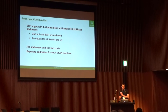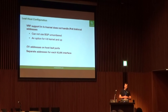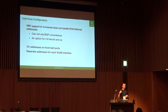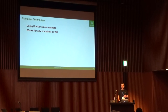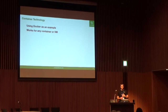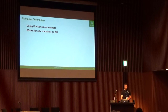Leaf-host config: VRF support in the 4.4 kernel does not have IPv6 link-local, so for this demo I had to use slash 31 addresses on each one of the interfaces between the host and the leaf. Each VLAN subinterface that gets put into a VRF has a slash 31 address talking to its neighboring leaf. While I use Docker in this example, this setup and configuration really works for any container technology — LXC, KVM, or even straight-up namespaces — whatever you're doing on a server, you can still use VRF on your host to provide isolation.